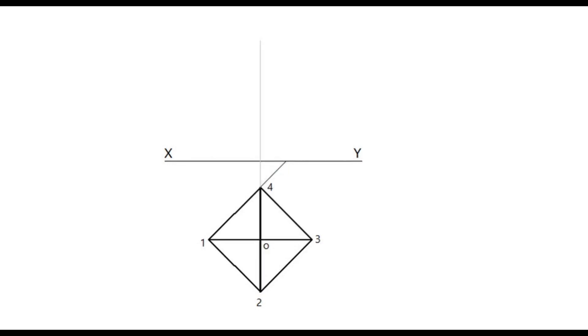Project the apex point and maintain the height of the elevation. Project the base corners up to the x-y line. Join these to the apex point. These are the slant edges in the elevation.